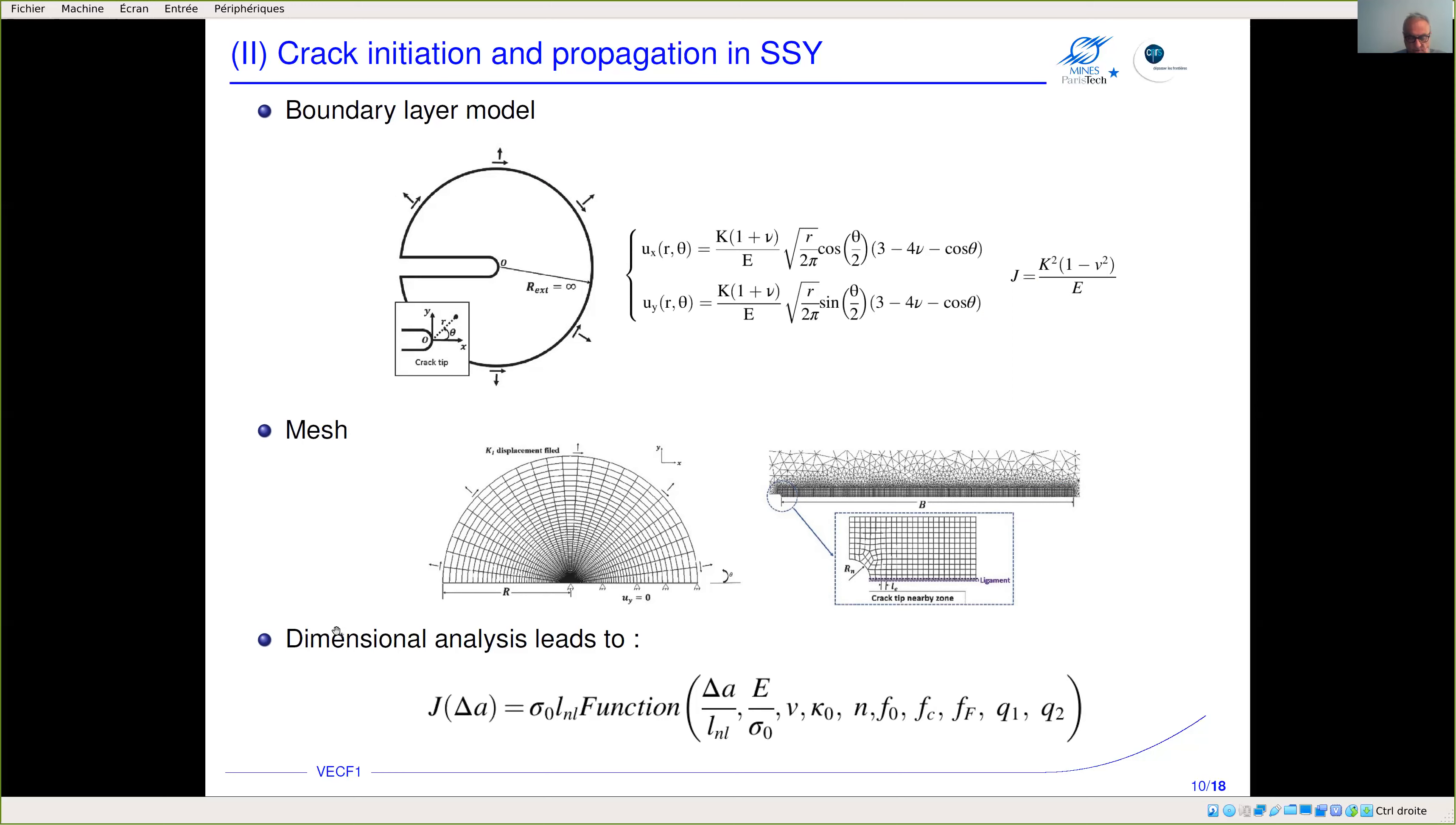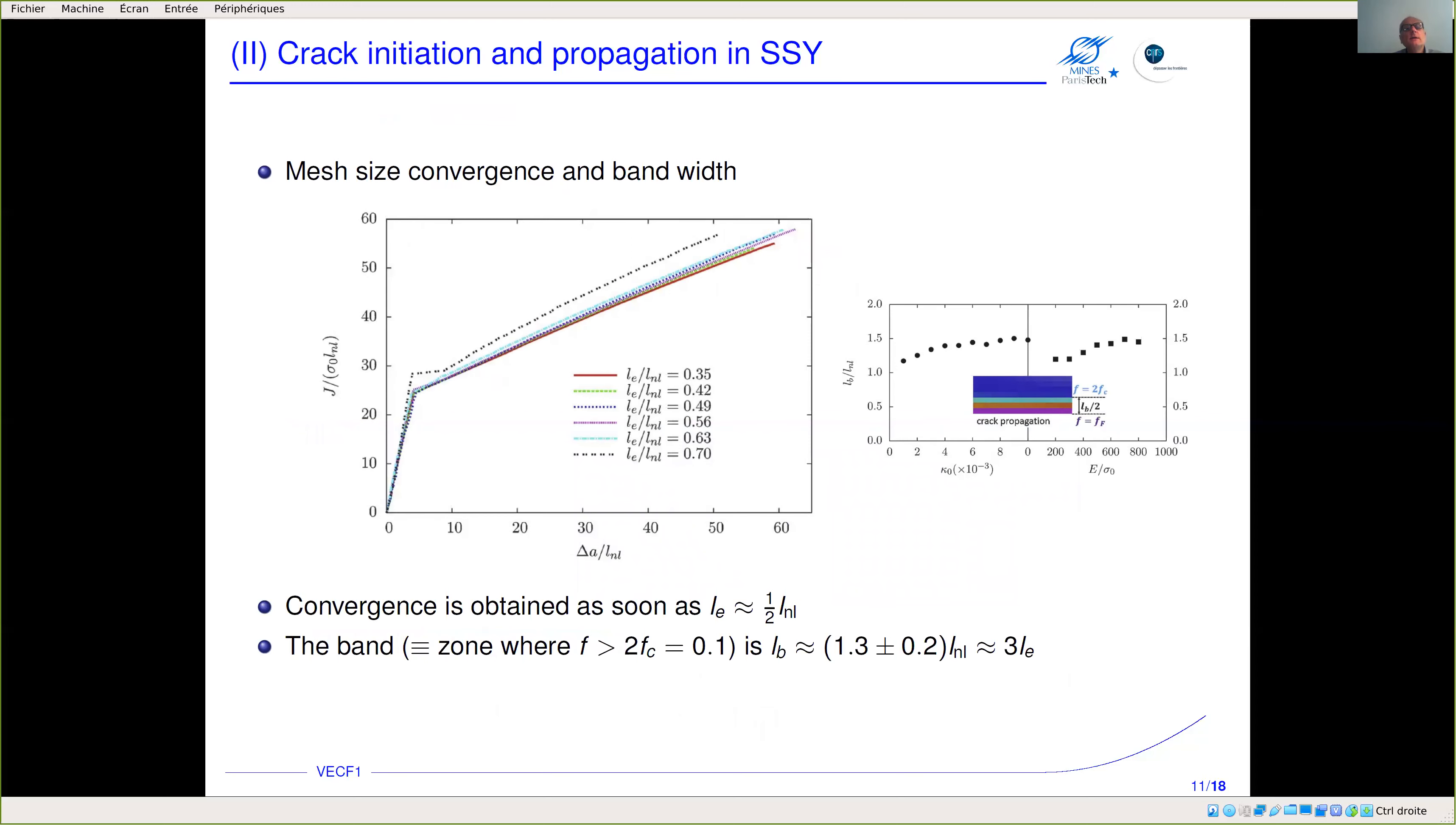If you do the dimensional analysis, then you find that the J-Δa curve is a function of the yield stress times the non-local length times a function of non-dimensional parameters—delta a over the non-local length, elastic parameters, parameters describing hardening, and all the parameters of the damage model. Once again we check mesh size convergence. You see that as soon as the element size is about one half of the non-local length, then we get a converged J-Δa curve.